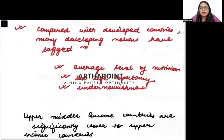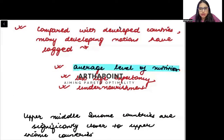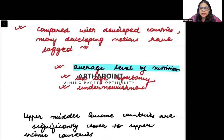Compared with developed countries, many developing nations have still lacked. There are three main aspects in which they lack. The first aspect is the level of nutrition. If we compare a developing and a developed nation, you will notice that a developed nation person will have a more protein-rich diet — the nutrition that they take is better.